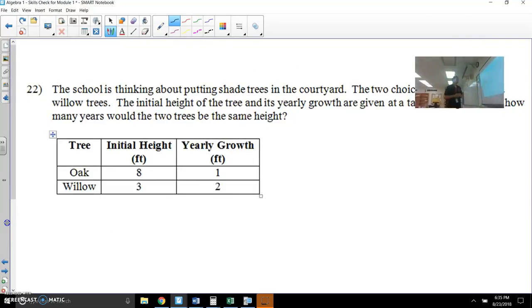The school is thinking about putting shade trees in the courtyard and two choices are oak trees and willow trees. Now this word initial can be difficult, but another word for initial is beginning. The beginning height of the tree and its yearly growth are given in a table. After how many years would the two trees be the same? So when you're talking about initial height, we don't need a variable there. But here we probably would need a variable because it means that you're adding 1 foot a year. Or for the second one, we're adding 2 feet per year.